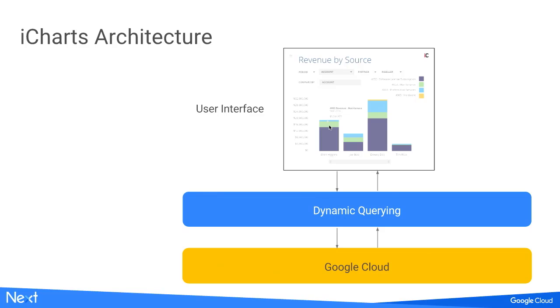How do we work? We start at the visualization layer — everything needs to be a visualization, because that's the goal. Those are the questions you're trying to answer and the decisions you're trying to make. Our system takes the visualization configuration and creates a dynamic query that includes all the calculations, aggregations, segmentation, filtering, and windowing, then parses it out into APIs like BigQuery's API, gets all the data back, and pushes it back to the user.